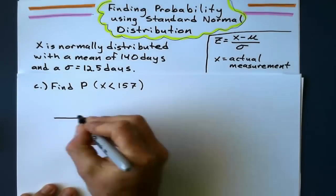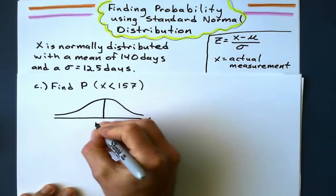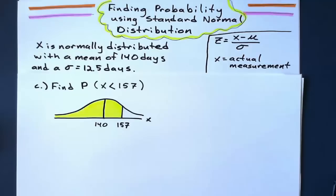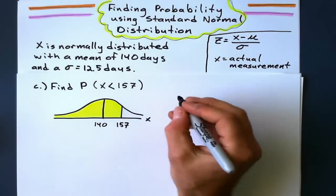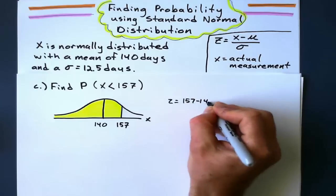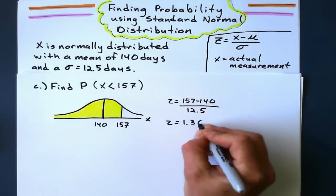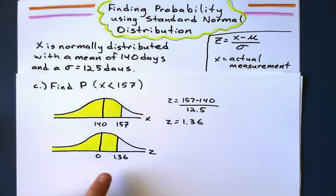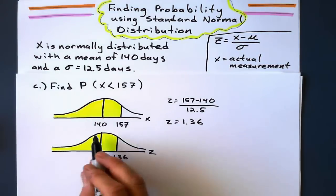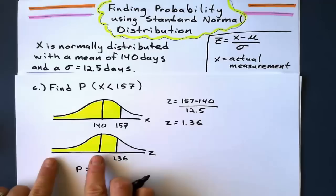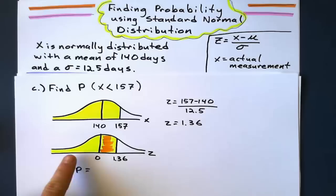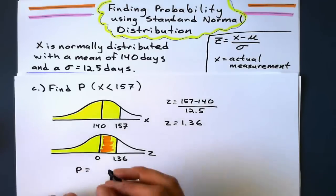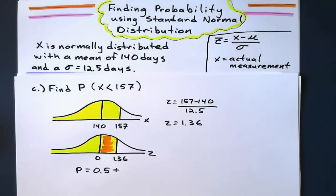Next up. Find the probability that X is less than 157. X curve. Mean 140. X 157. Less than. Going to be to the left of 157. We shade those to get an idea. Z equals 157 minus 140 divided by 12.5. I get a Z value of 1.36. Look up 1.36 on the table, but it's just going to give me the part to the right of the mean. It's going to give me that part there. So I'm going to add that part onto 0.5, not subtract it. Because it's more than half.